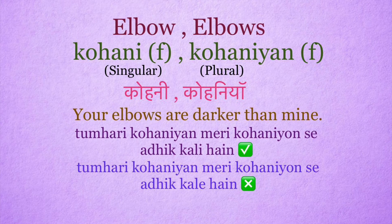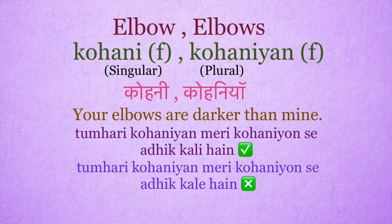Elbow: kohuni. Elbows: kohuniyan. It's a feminine word. Your elbows are darker than mine. Right sentence: Tumhari kohuniyan meri kohuniyon se adhik kali hain. Wrong sentence uses incorrect agreement.